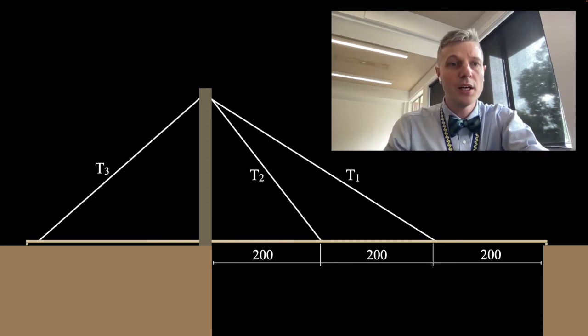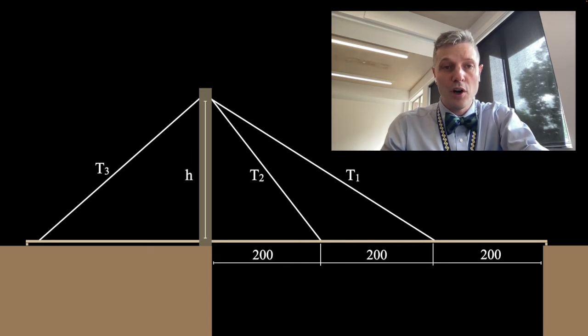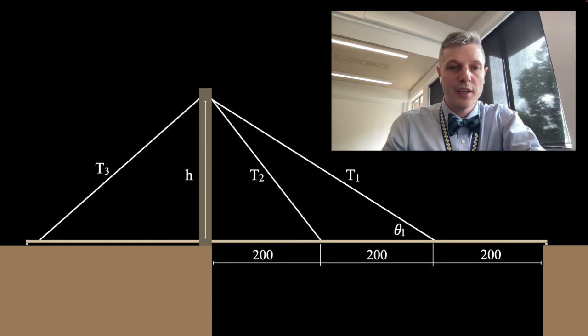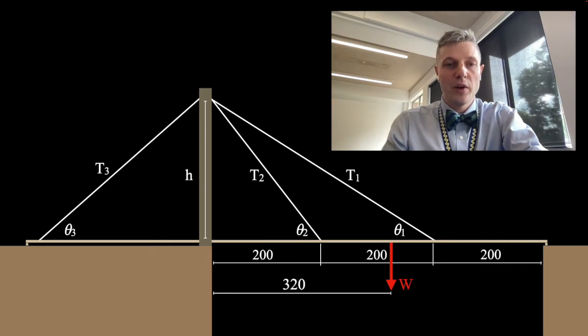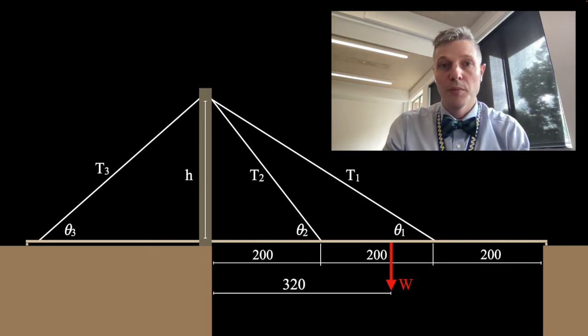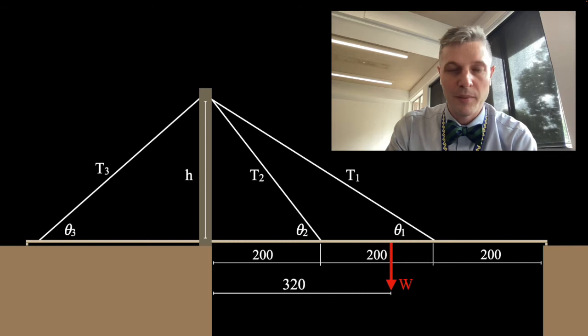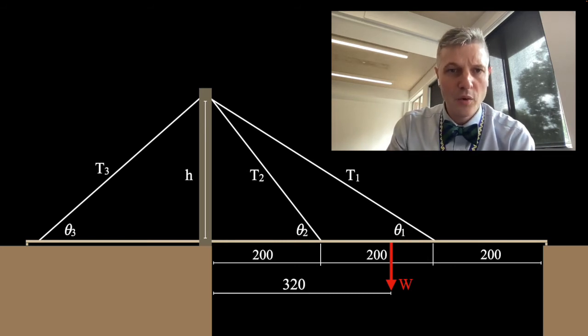You do also need to know the height of your pylon. From those two values you can calculate these angles theta 1, theta 2, and theta 3. Final value we need is where that weight force, that load was applied to our deck, and I've just made up a number of 320.